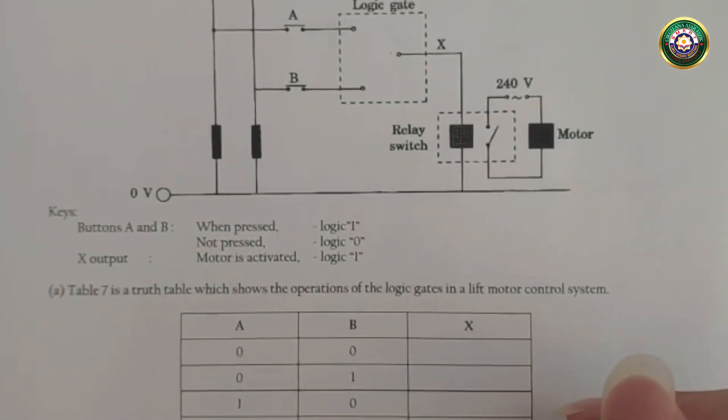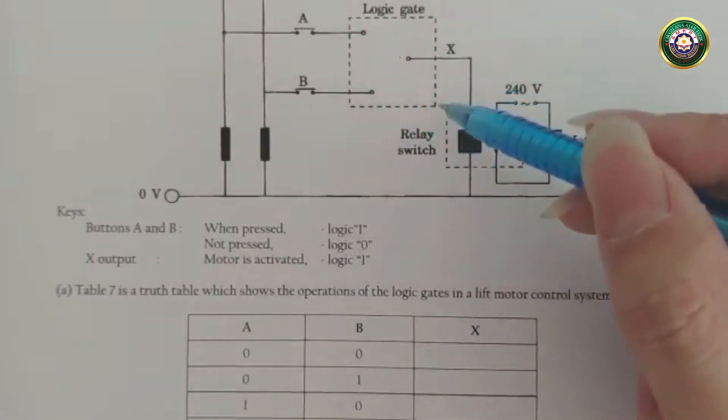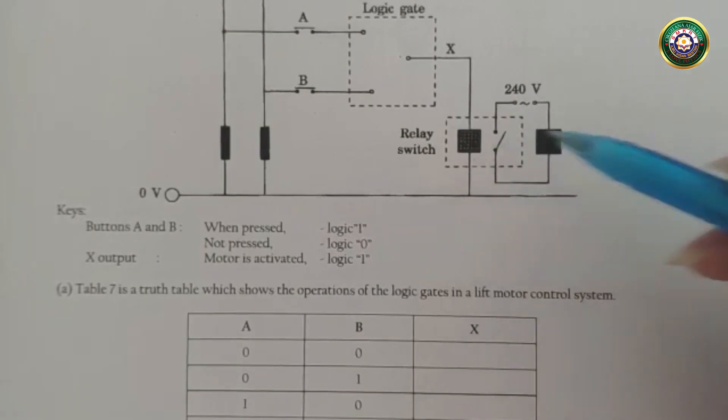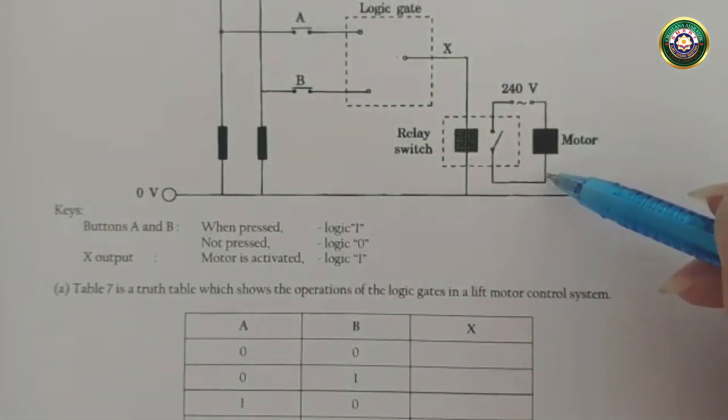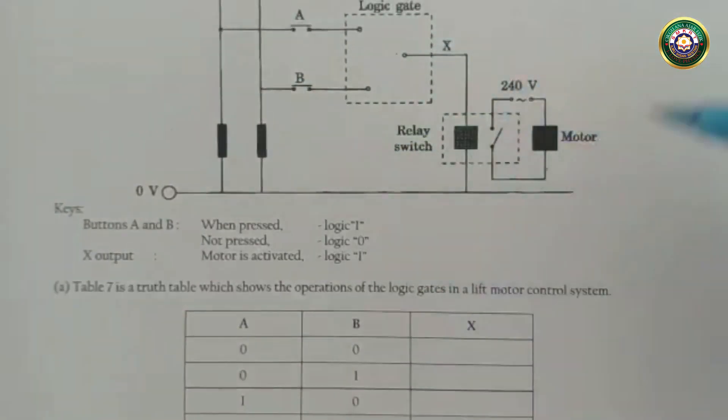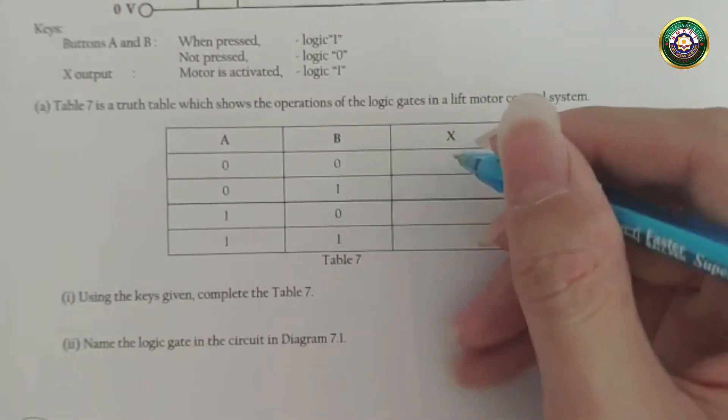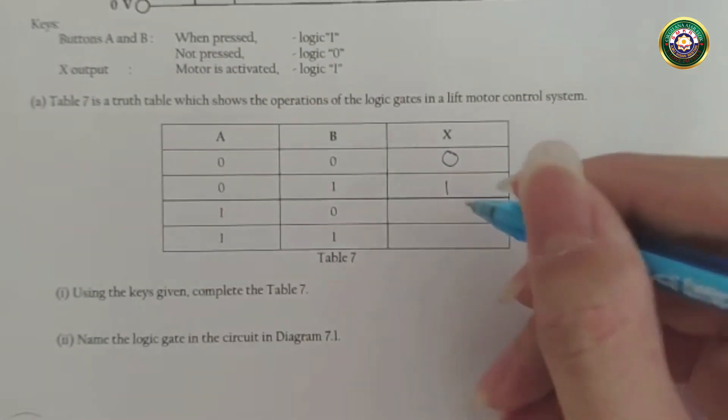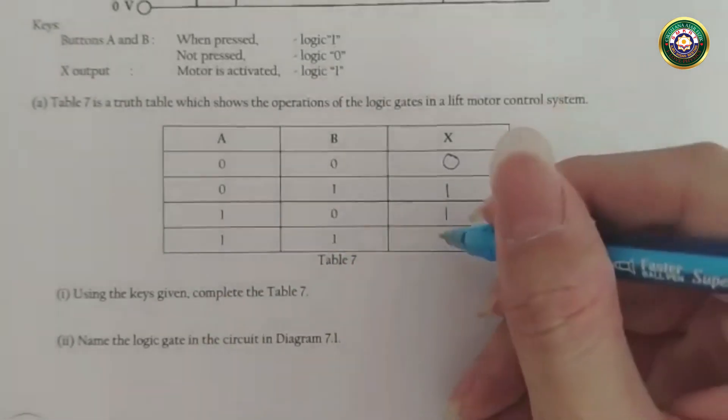Which means let's say someone presses A and B is not activated, the relay switch will still be activated and the motor will be ON. Both are switched ON, this is also ON. Both are switched OFF, then this is OFF. So from here, both of them OFF, so this is 0. One of them is ON, so it's 1. One of them is ON again, 1. Both of them are ON, yep, it's 1.